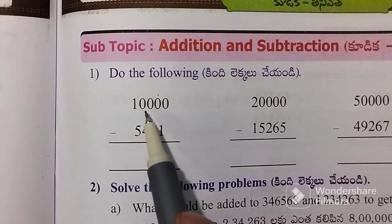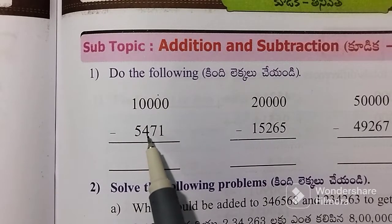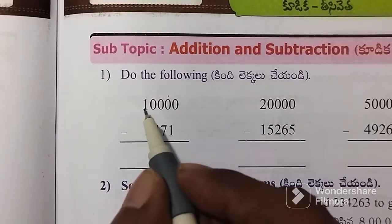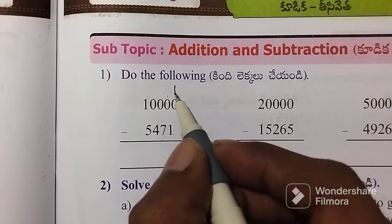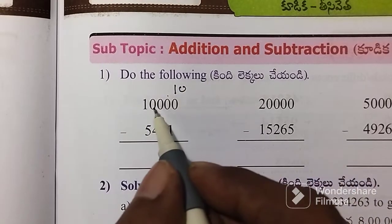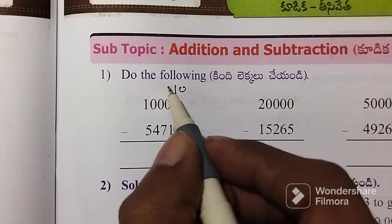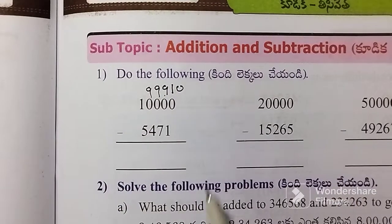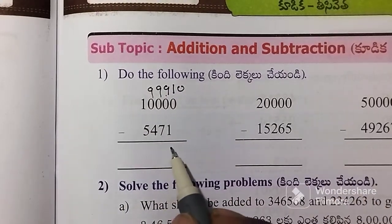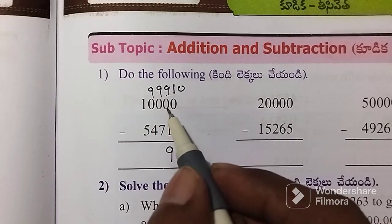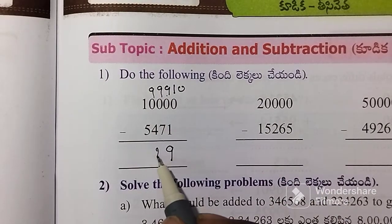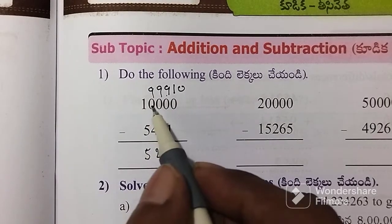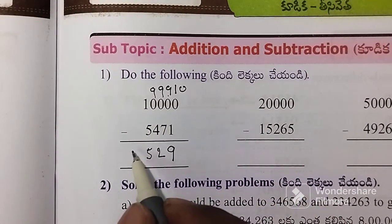We have 10,000 and 5,471. We have 0,000 and we have 2,000. Then we have 10,000. We have 9,000. Now, we have 10,000,000. Next, we have 7,000,000. We have 4,000,000. We have 5,000,000.